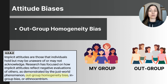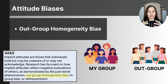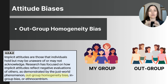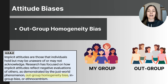A 1982 follow-up study by researchers Park and Rothbart used random group assignments based on painting preferences. They found that when participants rated out-group members, they tended to view them as more similar to each other and used more generalized terms. When describing their own in-group — even though it was randomly assigned — they saw members as more diverse and unique, highlighting individual differences. This represents out-group homogeneity bias.